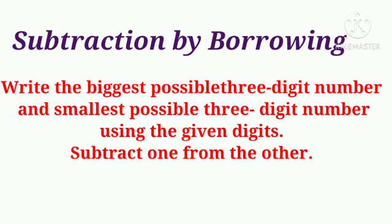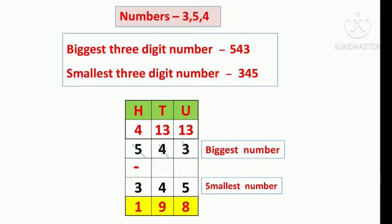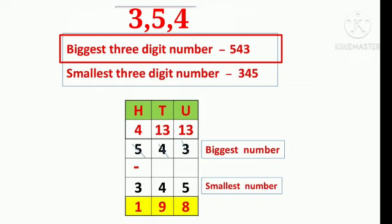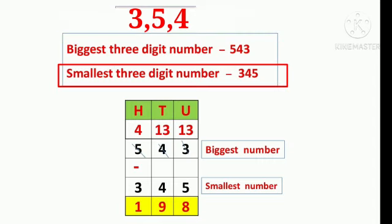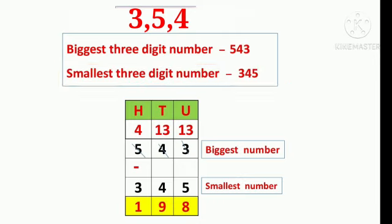Today we will learn how to make the biggest possible 3-digit number and smallest possible 3-digit number using given digits, and then subtract one from the other. Here the first example: given digits are 3, 5, 4. First we write the biggest 3-digit number: 543. Then the smallest 3-digit number: 345. Now we subtract these numbers one from another. First we draw the columns: hundreds, tens, and units.